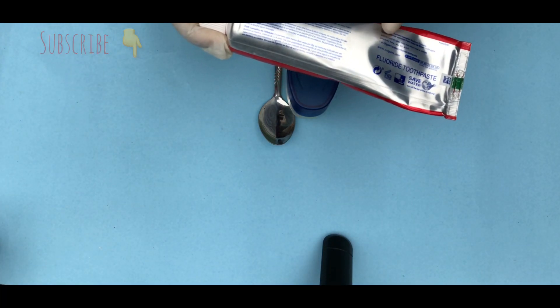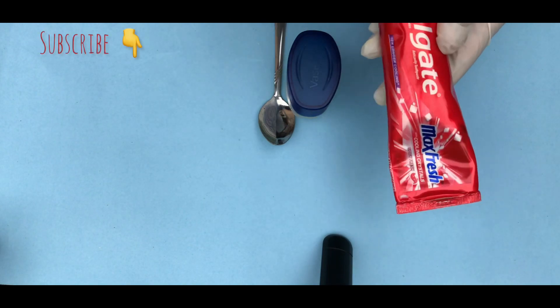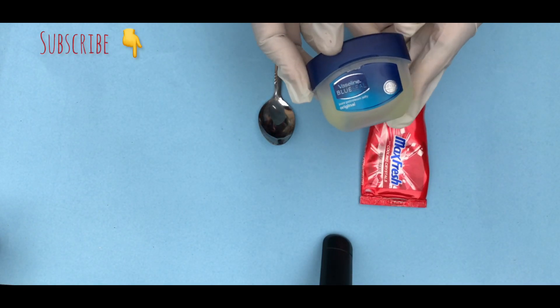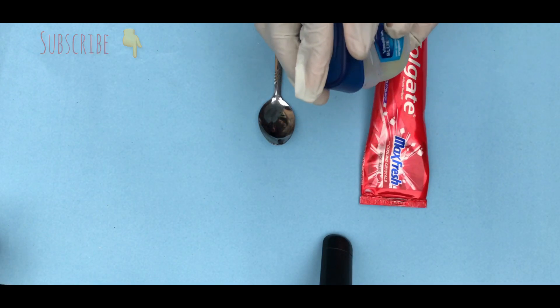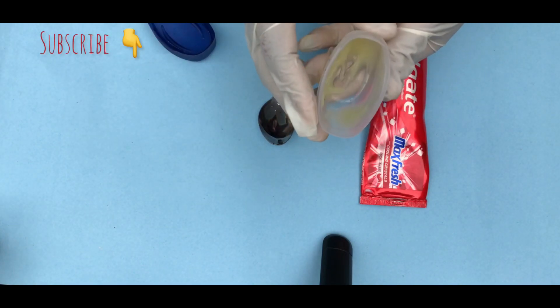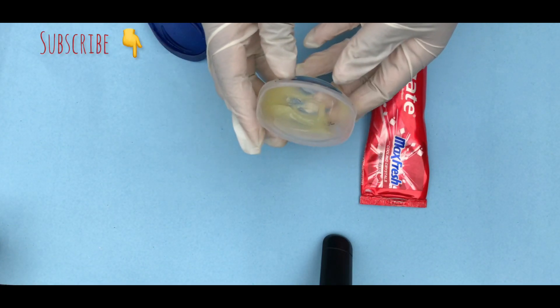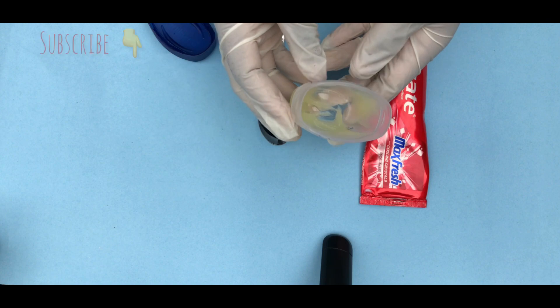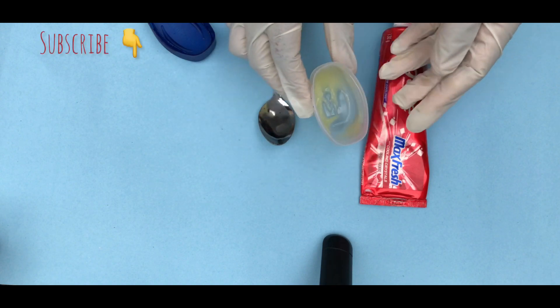to lighten dark spots, dry out pimples, remove blackheads and whiteheads. The next ingredient I'll be needing is Vaseline. Vaseline and Colgate toothpaste is very good. If you don't have very sensitive skin, then you can go